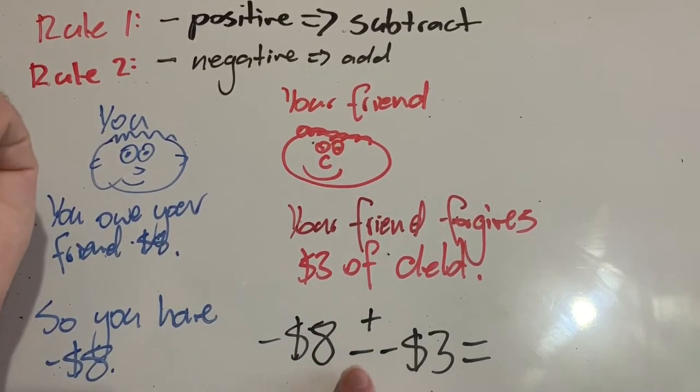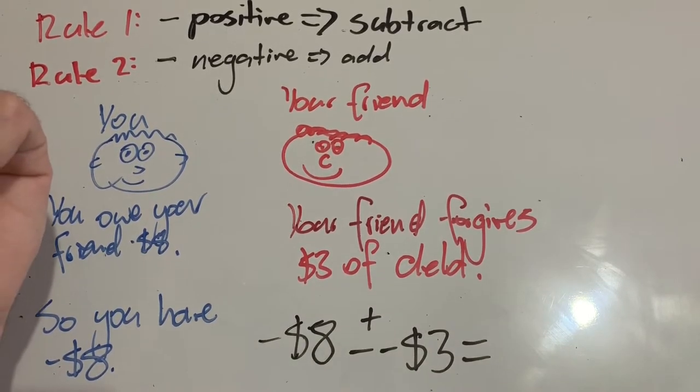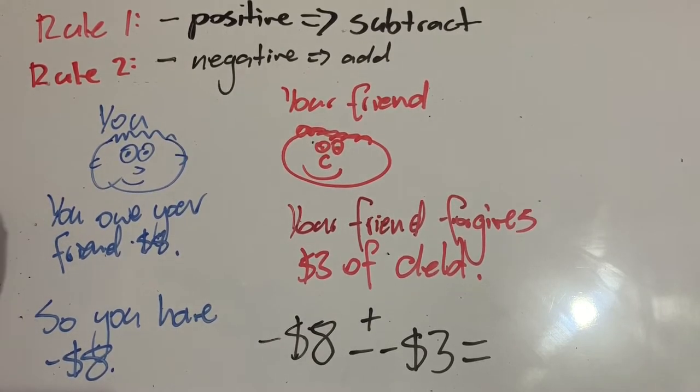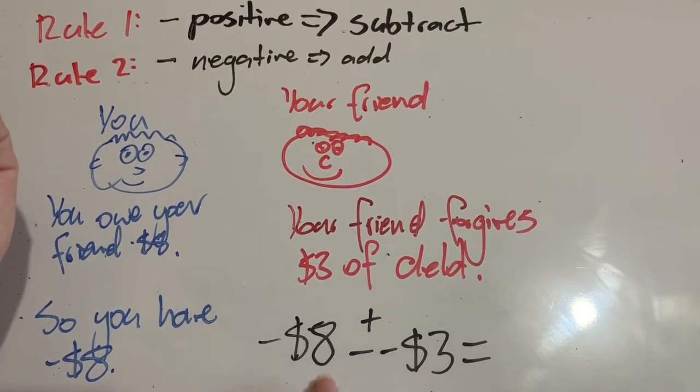These two negative signs, when we see these next to each other, that actually turns into an addition sign. A little bit strange, I know. And so now we can work this out. So we are adding $3 to negative $8.